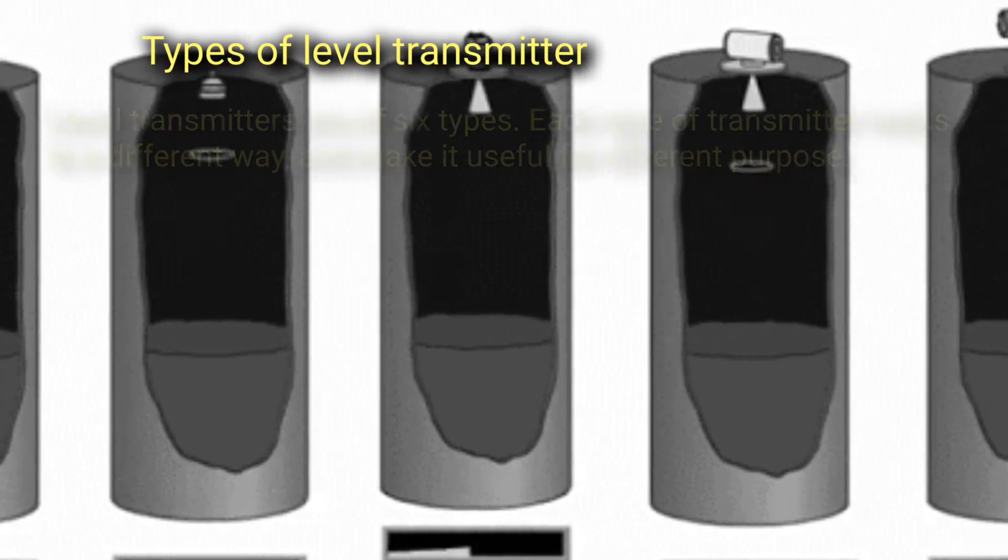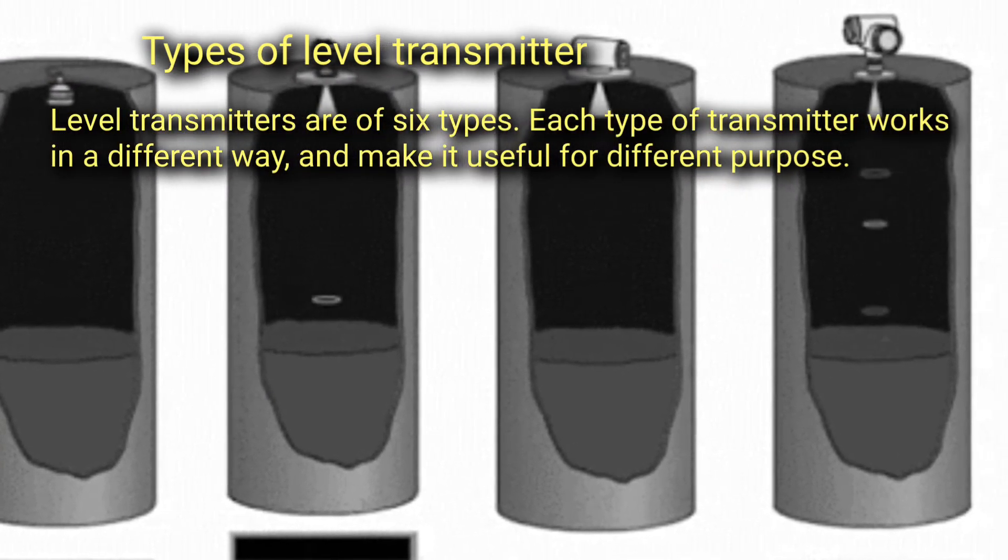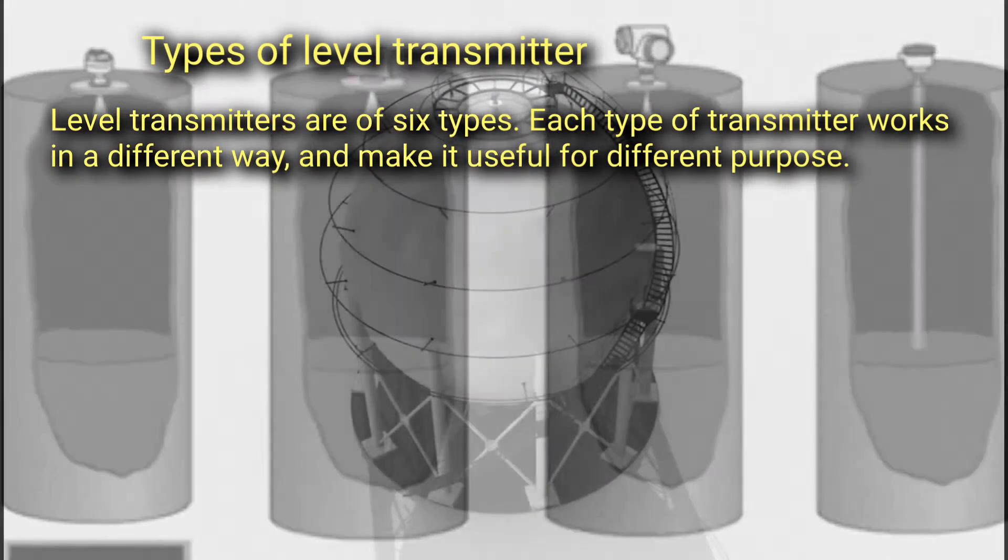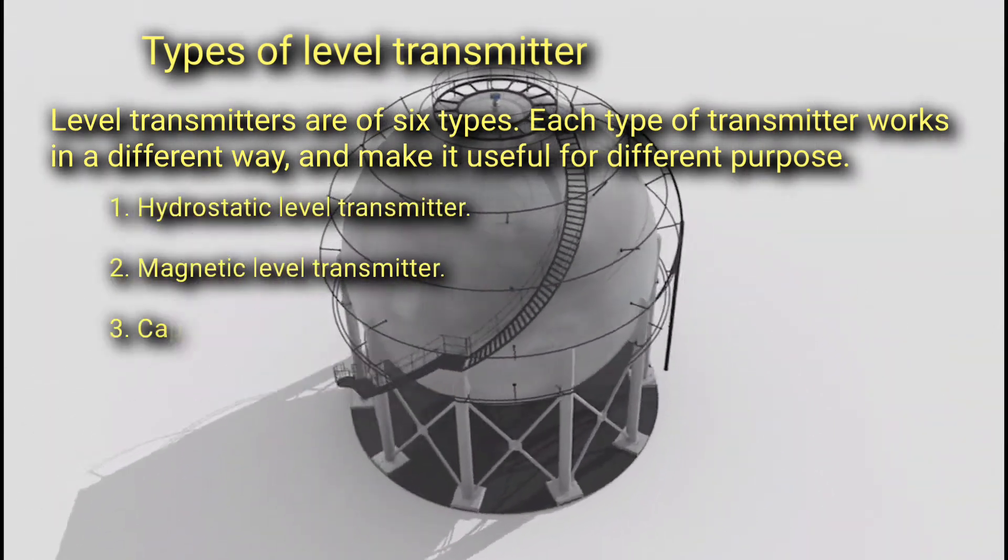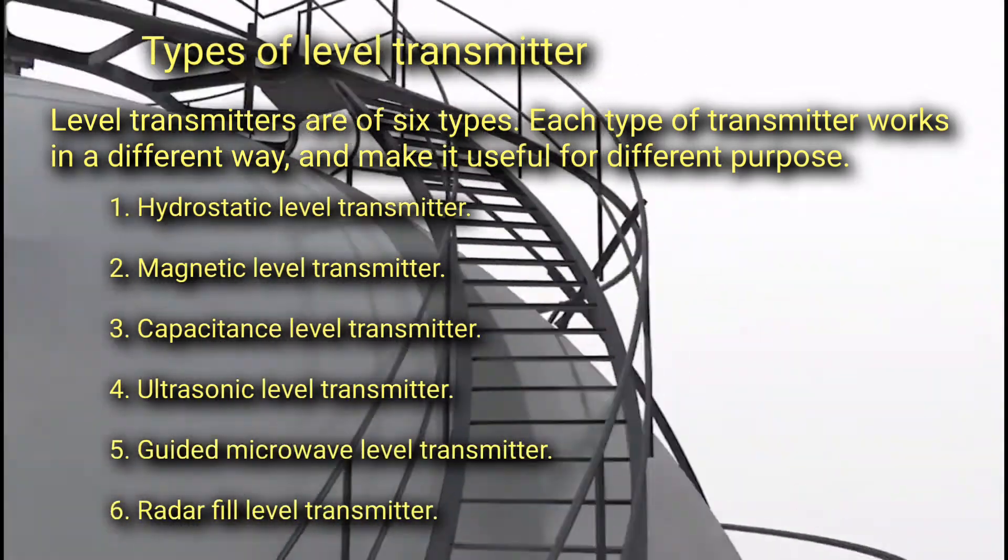Types of Level Transmitters. Level Transmitters are of six types. Each type of transmitter works in a different way and makes it useful for different purposes. One, Hydrostatic Level Transmitter. Two, Magnetic Level Transmitter.